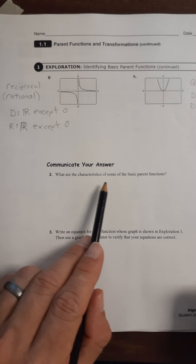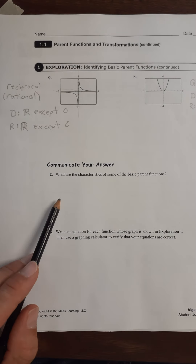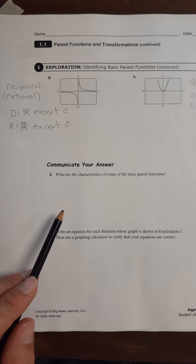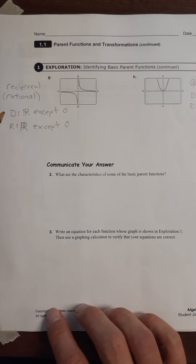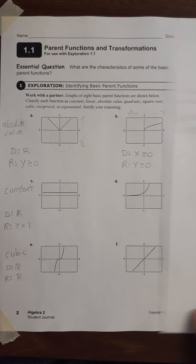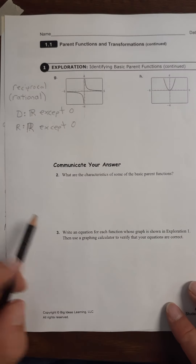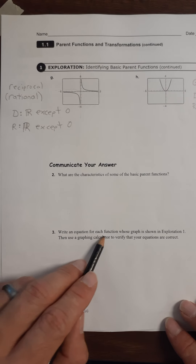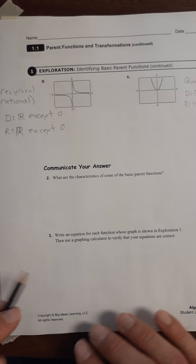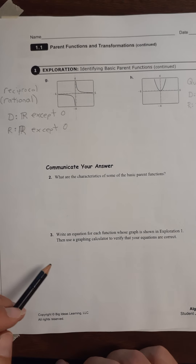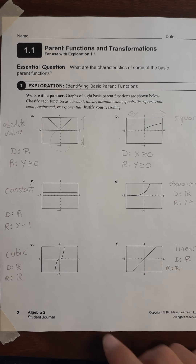What are the characteristics of some of the basic parent functions? There are a lot of things you could answer for that, but I would argue that we've just answered a lot of those questions by discussing the domain and range of each one. So we're going to say those are our answers for number two. For number three, it says write an equation for each of these graphs. Instead of writing them all in one place, why don't we write the equation for each graph right by the actual graph — that'll be easier when you want to look back and refer to it later.